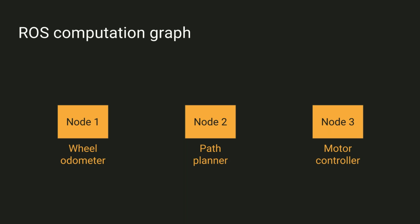In this example we have three different nodes. One node might just read the odometer on the robot's wheels and tell you where the robot is relative to where it started from.